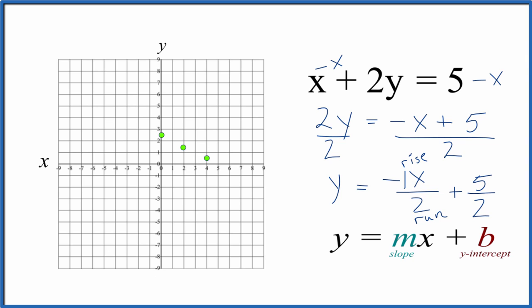There's our line. Let's put a line through that. Then we'll put arrows, show this goes to infinity. And that's the graph for x plus 2y equals 5.